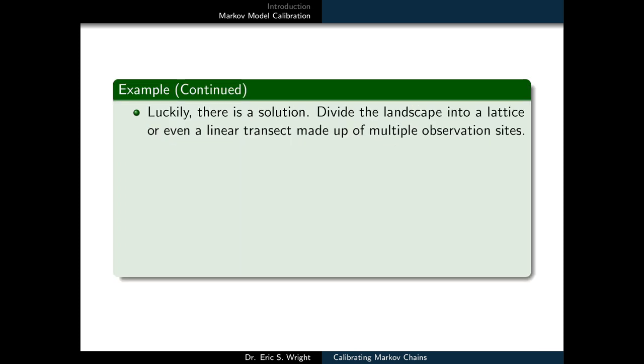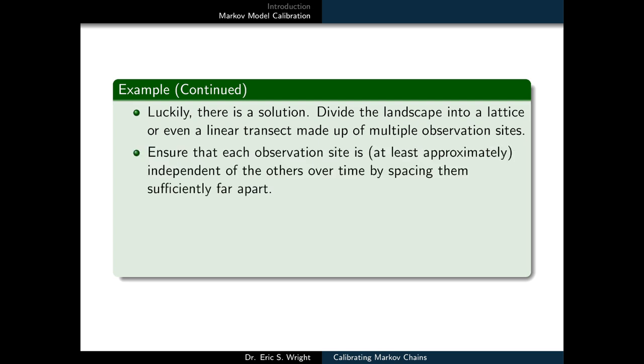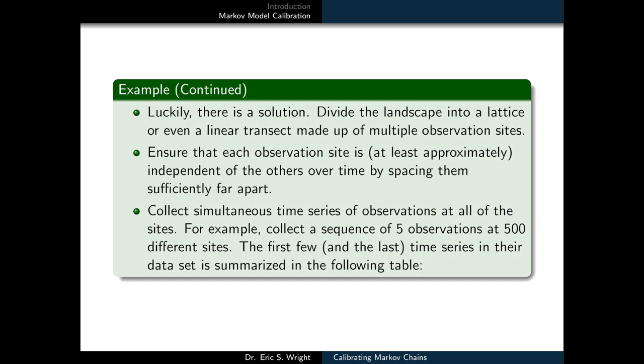Luckily, there's a solution. Another thing we could do is divide the landscape into a lattice or even a linear transect made up of multiple observation sites, not just one big site for the entire landscape. We would want to ensure that each observation site is, at least approximately, independent of the others over time by spacing them sufficiently far apart.